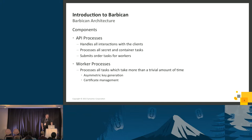The second type are worker processes. They do the longer-running tasks behind the scenes, and when they're done, they update the database with the results so the API nodes can see them. Those longer-running tasks include asymmetric key generation, symmetric key generation, and certificate management.